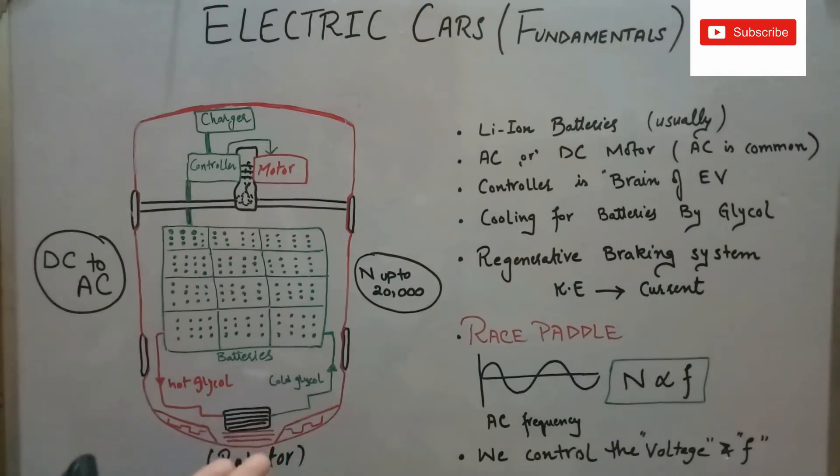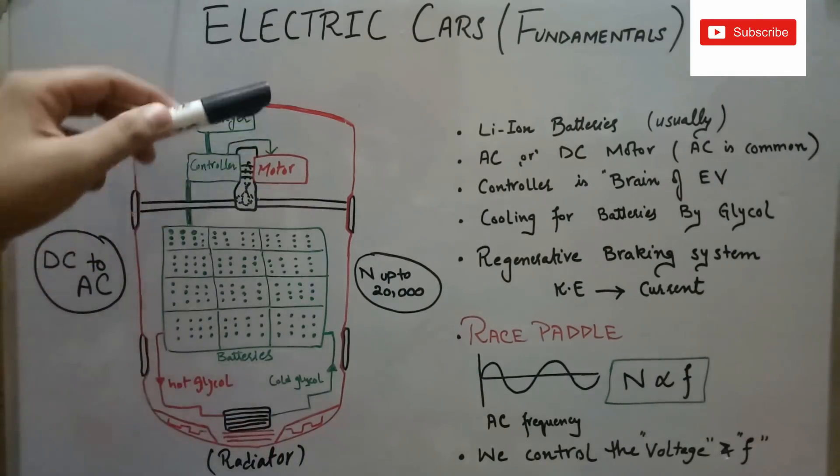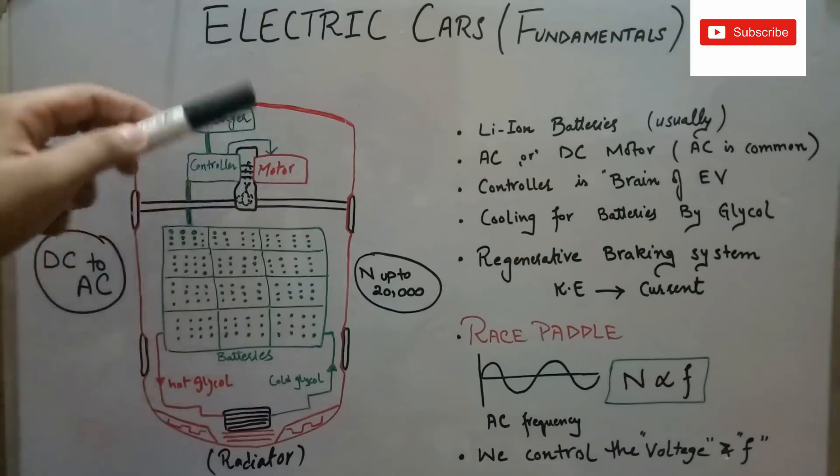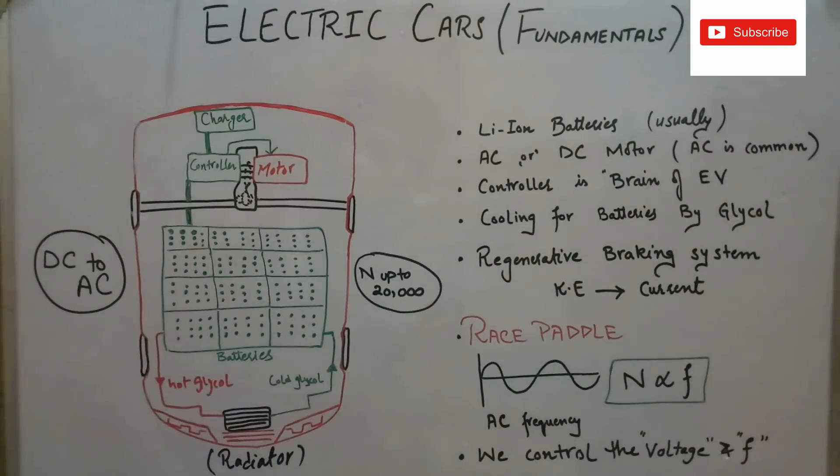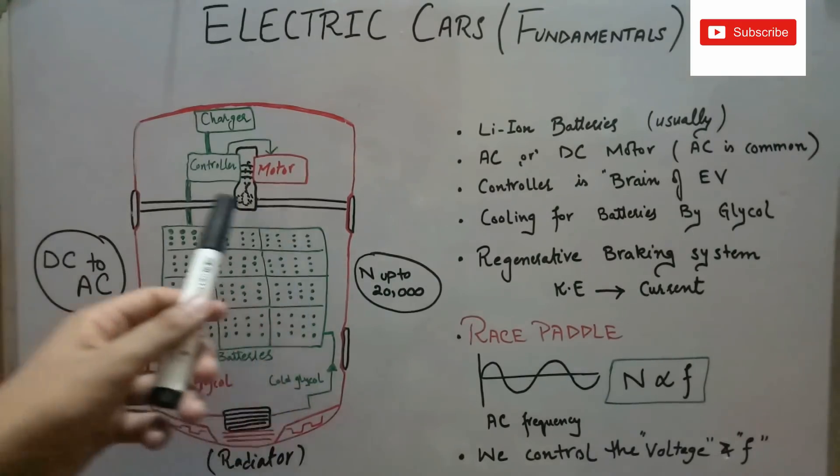Now an important aspect to be noted is the RPMs for this induction motor can reach up to 20,000, which are far greater than the RPMs produced at the crankshaft of the internal combustion engine, which are the counterparts for these batteries.